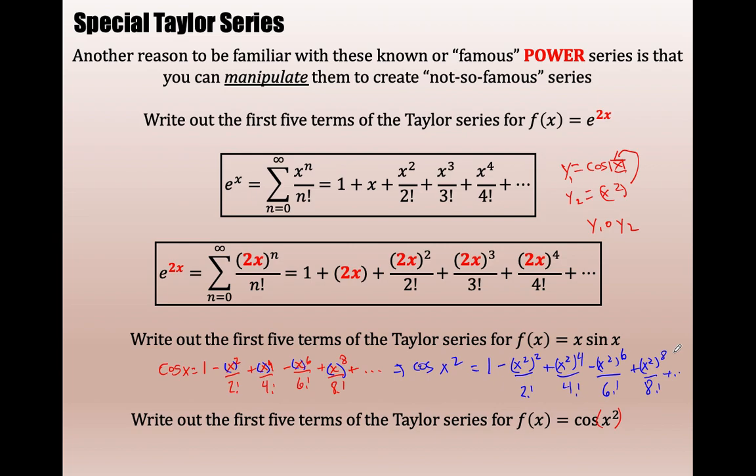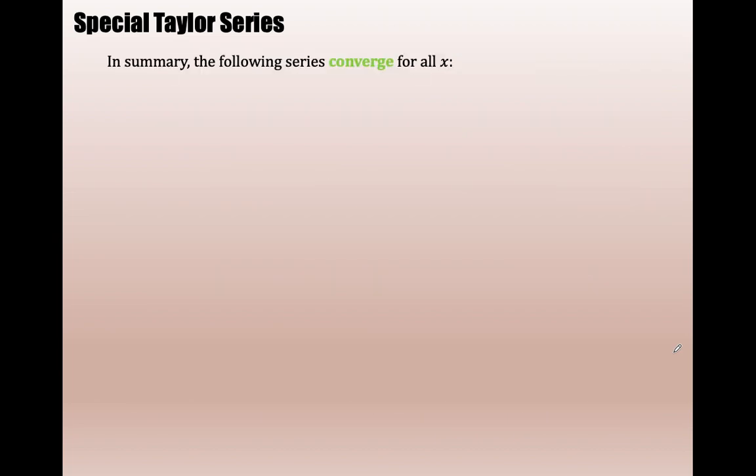Your homework is a handout that goes along with this, where you are just using your three famous Taylor series to approximate values of e, sine, and cosine. The second part asks you to do some manipulation of your famous power series — either multiplying, dividing, or composing to create new ones. All right, have a swell day. Oh, I forgot — I had a summary slide.